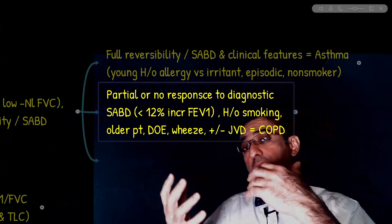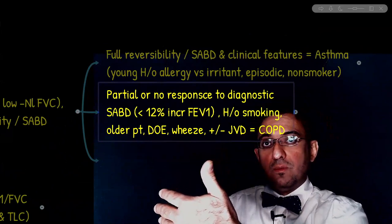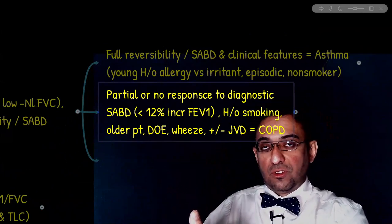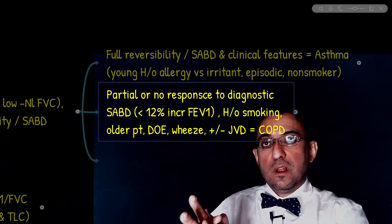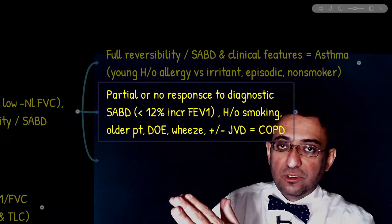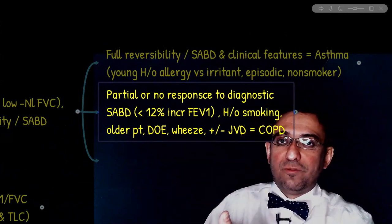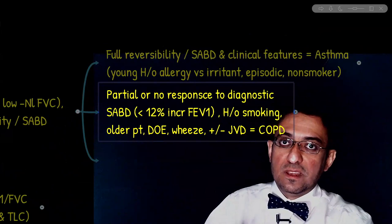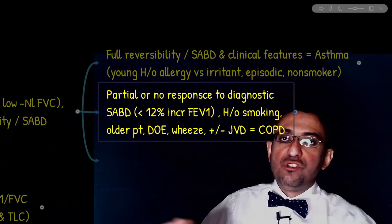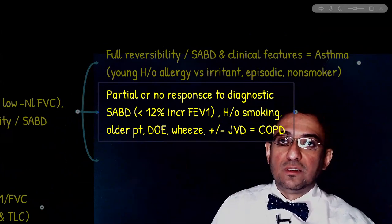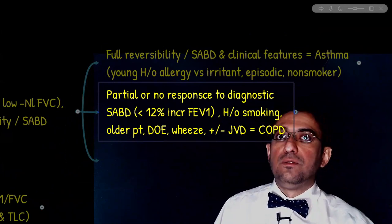Emphysema involves damage or destruction of the alveolar wall, so diffusion capacity across the alveolar membrane should be decreased. We have low DLCO in emphysema. While in chronic bronchitis, DLCO is normal. In the late stage of both COPD subtypes, DLCO is reduced. But in early chronic bronchitis, it's not reduced. However, in emphysema, DLCO is always universally reduced.